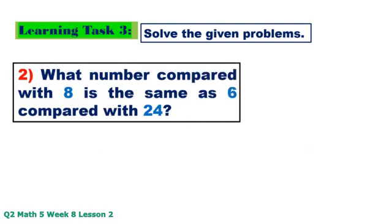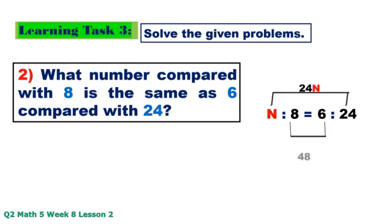Number 2: What number compared with 8 is the same as 6 compared with 24? So N is to 8 equals 6 is to 24. N times 24 equals 24N, 8 times 6 equals 48. 48 divided by 24 equals 2.